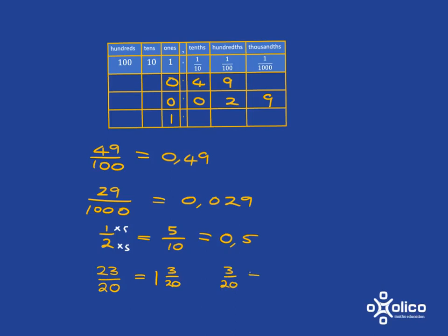And so all we have left to do is turn 3 twentieths into a decimal. So we need to either get it as an equivalent fraction with 10, 100, or 1,000 at the bottom. 100 is going to be what we go for here because 20 multiplied by 5 gets me to 100. And so I'm going to get 15 over 100. And so I'm going to put those in. And I get that this is 1.15.